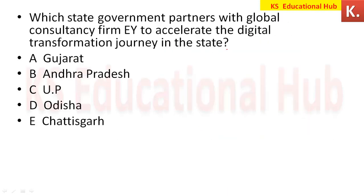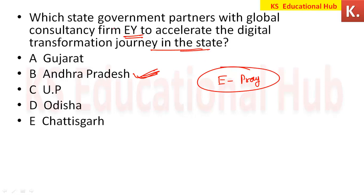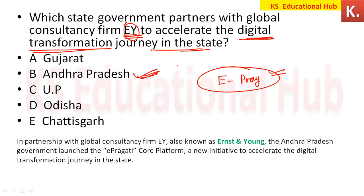Which state government partnered with global consultancy firm EY (Ernst & Young) to accelerate the digital transformation journey? Andhra Pradesh created a platform called E-Pragati and partnered with EY (Ernst and Young) for digital transformation of the state.